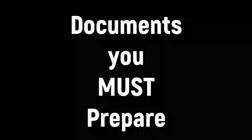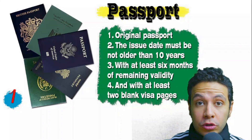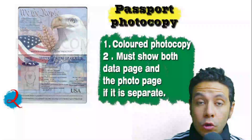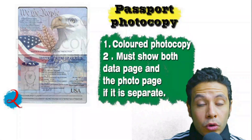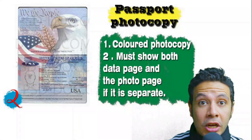Speaking about required travel documents: your passport must be original, not older than 10 years, with at least six months of remaining validity and at least two blank visa pages. You will also need a passport photocopy — preferably colored, showing both the data page and photo page. In some cases you may need to photocopy every page, but generally only the data and photo pages are required.